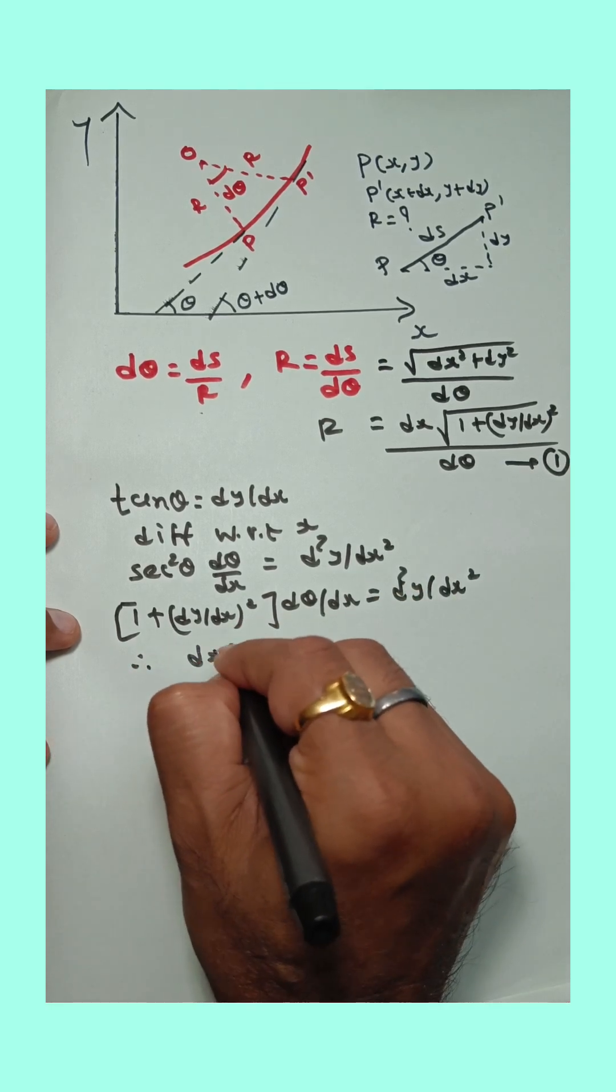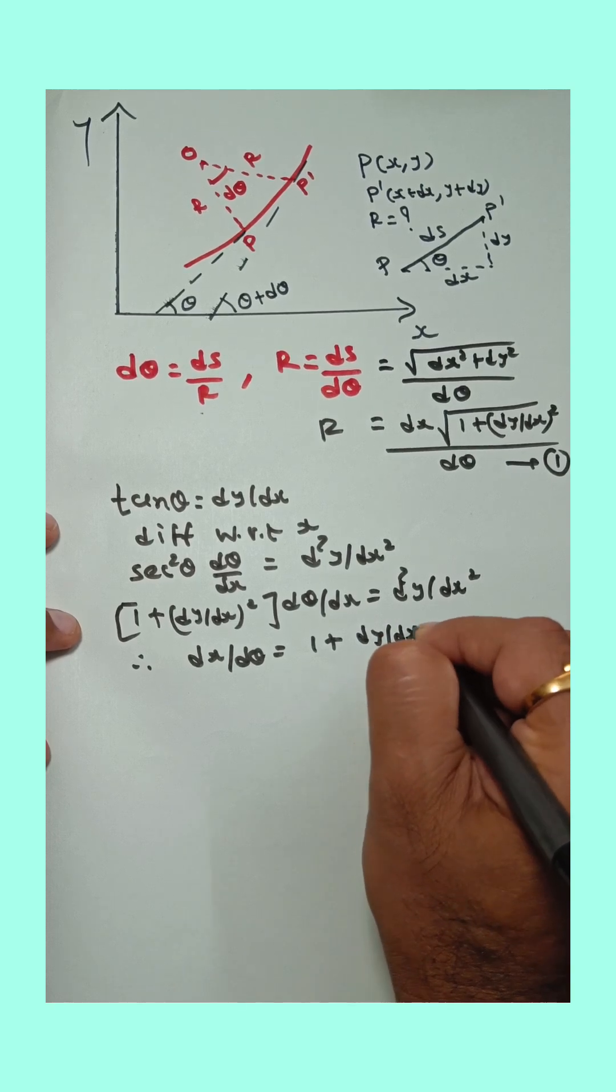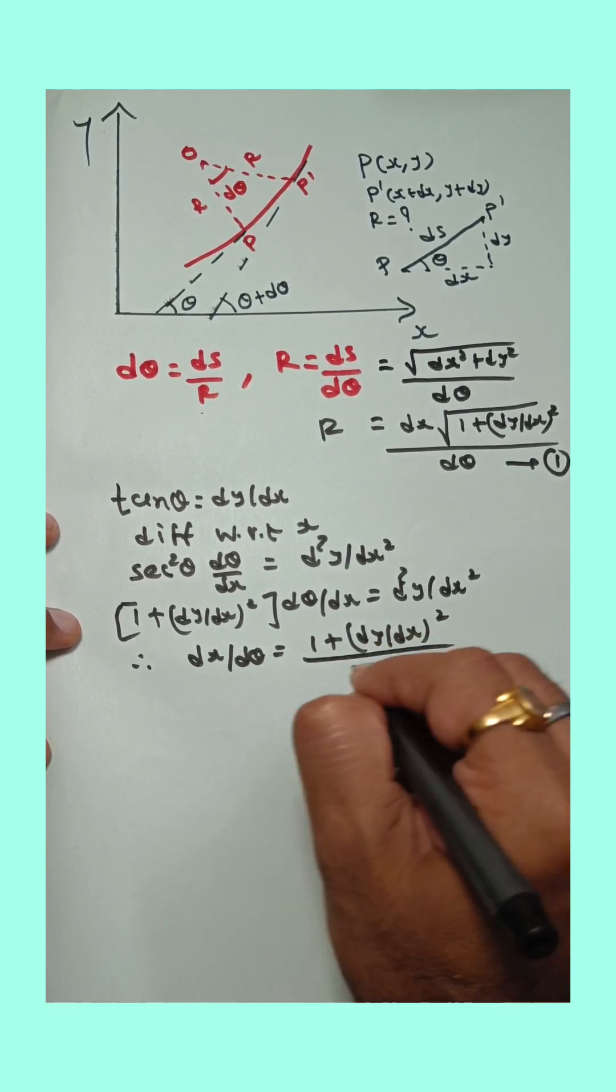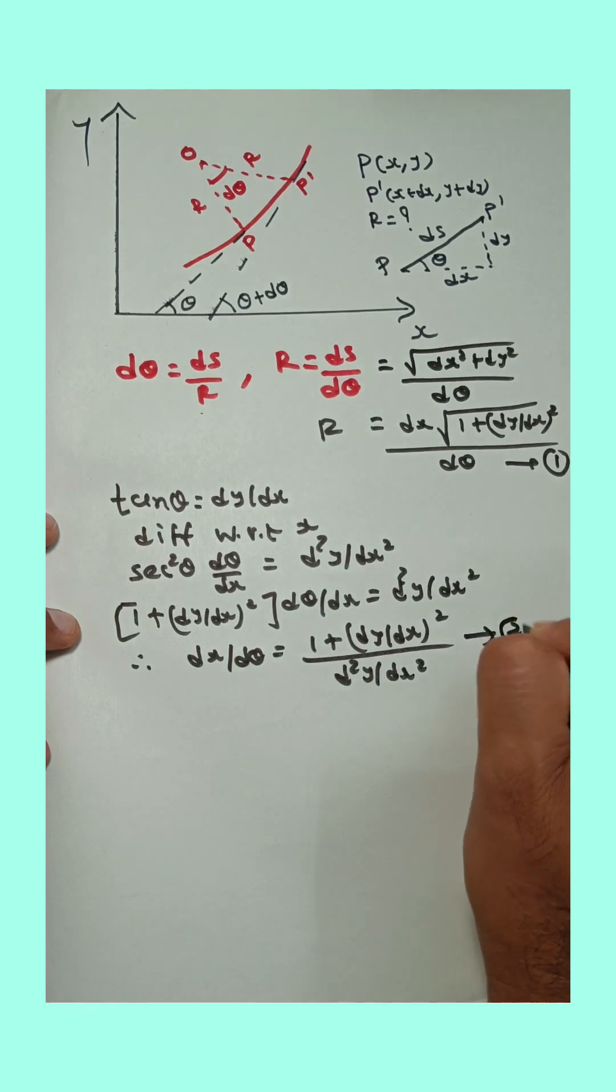Now from this equation, dx upon dθ is 1 plus dy upon dx square divided by d square y upon dx square. Equation number 2.